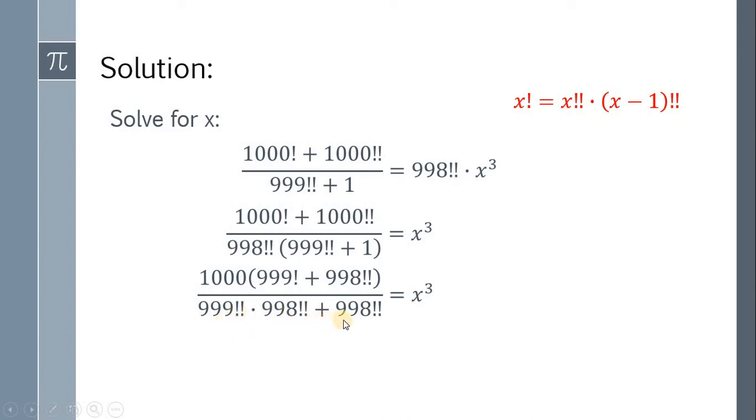Using our identity, 999 double factorial times 998 double factorial is equivalent to 999 factorial. Therefore, 999 factorial plus 998 double factorial will cancel out and we will get x cubed is equal to 1000.